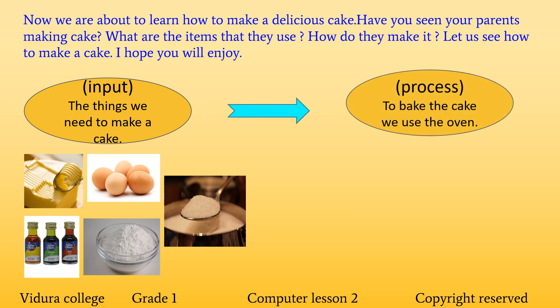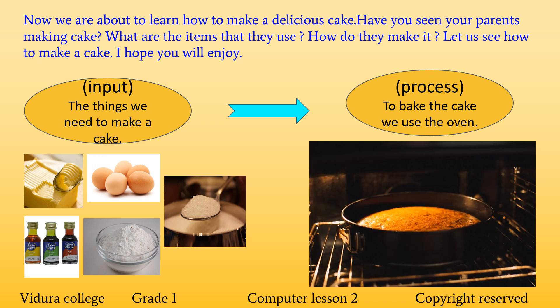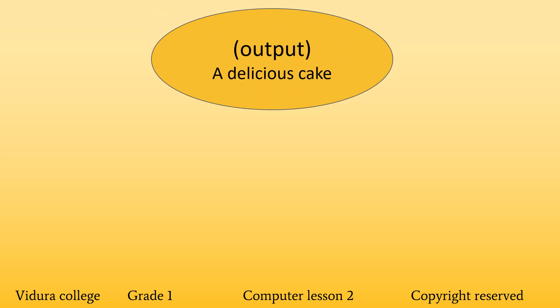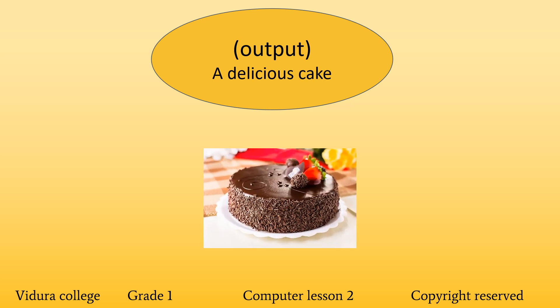And then, it is the process. To bake the cake, we use the oven. The oven starts processing. The output is a delicious cake. Mmm, it looks yummy, isn't it?